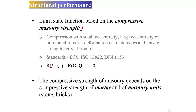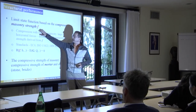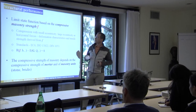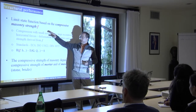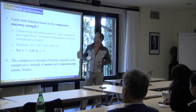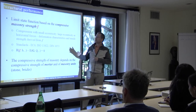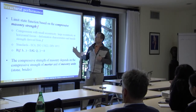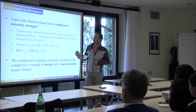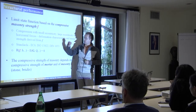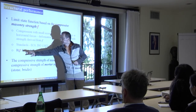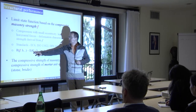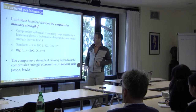Our limit state function for probabilistic analysis will be based on compressive masonry strength. For cases of horizontal loading or similar cases, we can derive tensile properties based on compressive strength. We have some uncertainty, and at the end our investment into compressive masonry strength can be less useful in cases where tensile properties are needed — but this is for future developments. For now, let's focus on compressive strength. We will have resistance based on compressive strength and some geometry, probably dominating permanent loads, and some imposed or climatic loads.